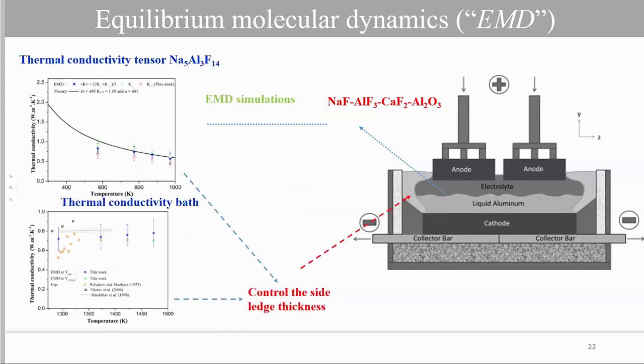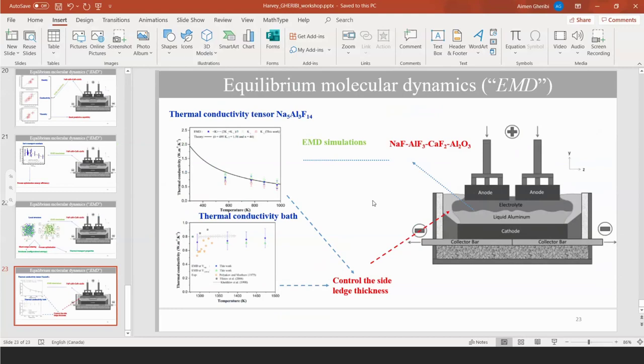Having a good description, for example, of thermal conductivity of solid and liquid phases allows us, for example, to control the solid thickness in the aluminum electrolysis cell. So that's it. These are some examples just to illustrate why we are increasingly using atomistic simulation in the center. That's it for me, and if you have any questions.